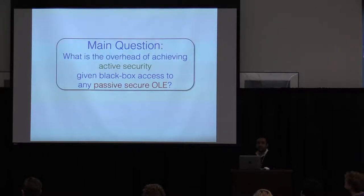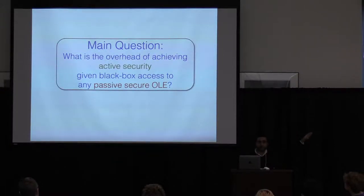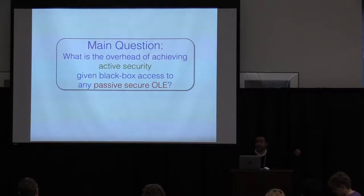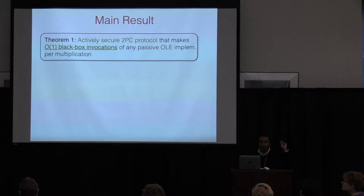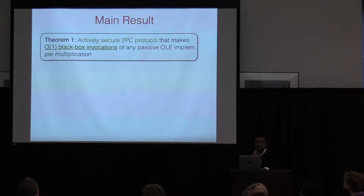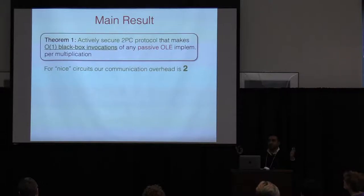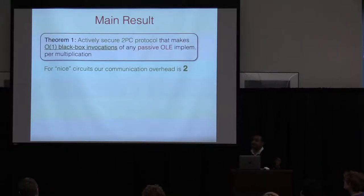The main question we are trying to address is: what is the overhead of achieving active security given black-box access to any passive OLE? Not any tailor-made or specific implementations. The main result is that we show a compilation using a constant number of black-box invocations of a passive OLE. If your circuit is wide enough, this overhead is actually two.